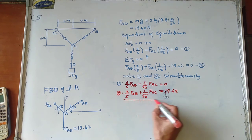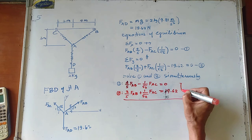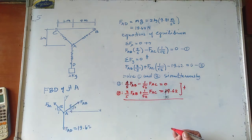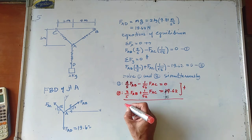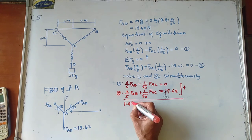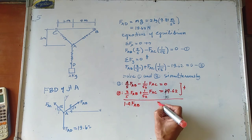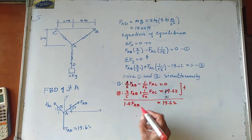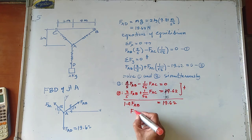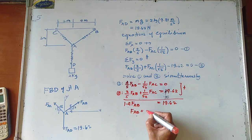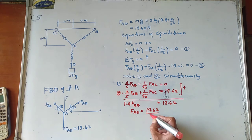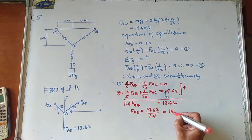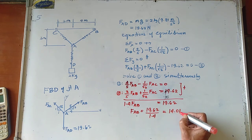Let us try to add the two equations to eliminate F_AC. 4 over 5 F_AB plus 3 over 5 F_AB equals 1.4 F_AB, and this equals 19.62. So F_AB equals 19.62 all over 1.4, which equals 14.014 newtons.